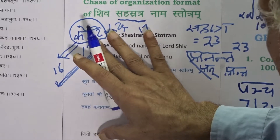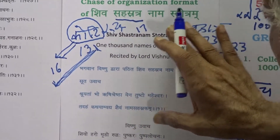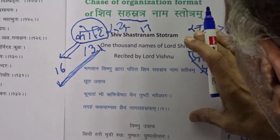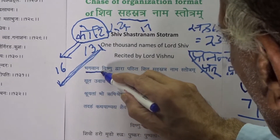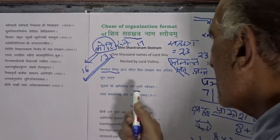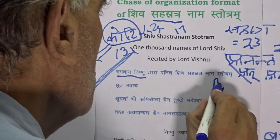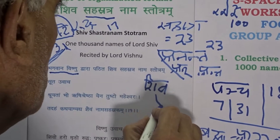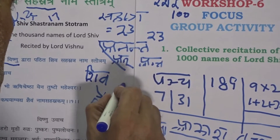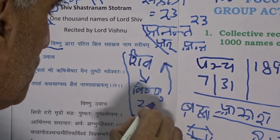Shiv Sahasranam Stotram means 1000 transcendental names of Lord Shiva, the transcendental Lord. These names are recited by Lord Vishnu. We know that Lord Vishnu is living within the cavity of the heart of the transcendental Lord, and within the cavity of Lord Shiva is the seat of Lord Vishnu. Within the cavity of the heart of Lord Vishnu is the seat of Lord Shiva. It is this phenomenon which deserves to be imbibed well.